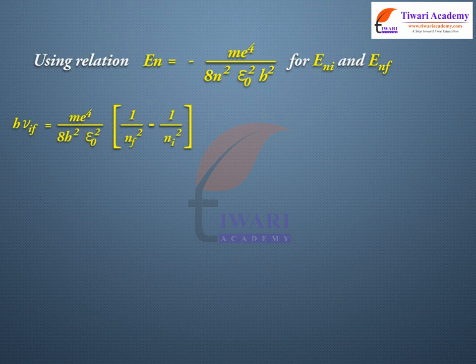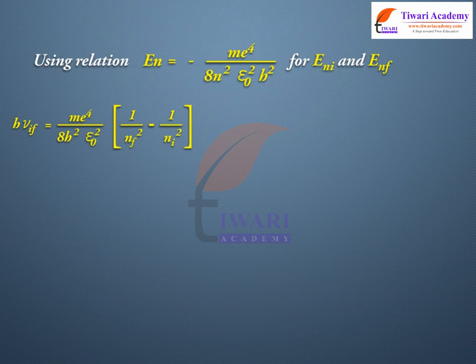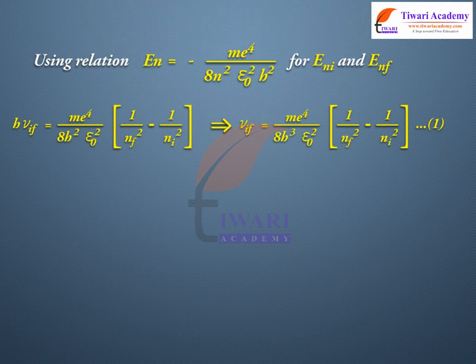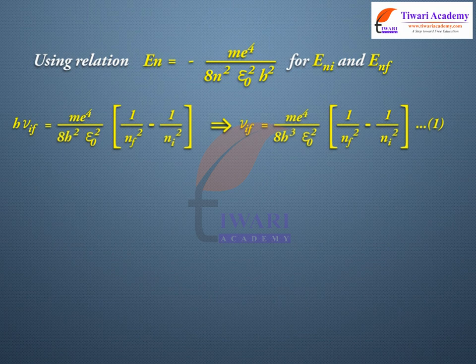Using relation En = -(me^4)/(8h^3*ε0^2) * (1/n^2) for Eni and Enf: h*nu_if = (me^4)/(8h^3*ε0^2) * [1/nf^2 - 1/ni^2], which gives nu_if = (me^4)/(8h^3*ε0^2) * [1/nf^2 - 1/ni^2], equation 1.